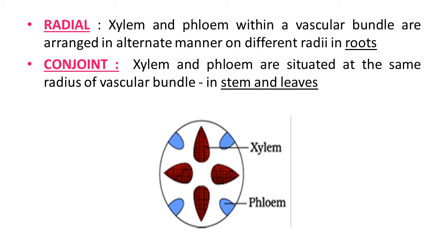In radial type of vascular bundle arrangement, xylem and phloem within the vascular bundle are arranged in an alternate manner on different radii. This type is generally observed in roots. In the figure, you can see this vascular bundle arrangement where xylem and phloem — both conductive tissues — are alternately arranged on different radii: one radius has xylem, next has phloem, then xylem again, and so on. This is known as radial type of vascular bundle.